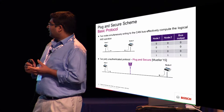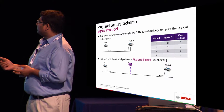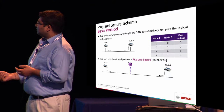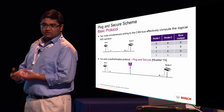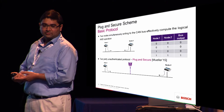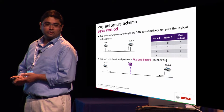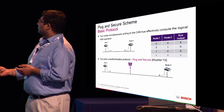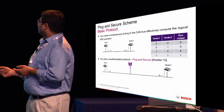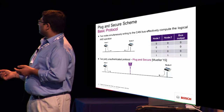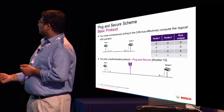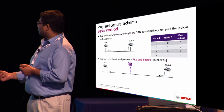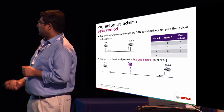The idea itself is pretty simple. If two nodes or two ECUs write simultaneously on the CAN bus, the physical structure makes the bus behave as a logical AND operator. If node 1 and node 2 are writing simultaneously, this is basically a truth table of what somebody will see on the bus. This was used by one of our colleagues, Andreas Müller, to exchange keys between two parties.